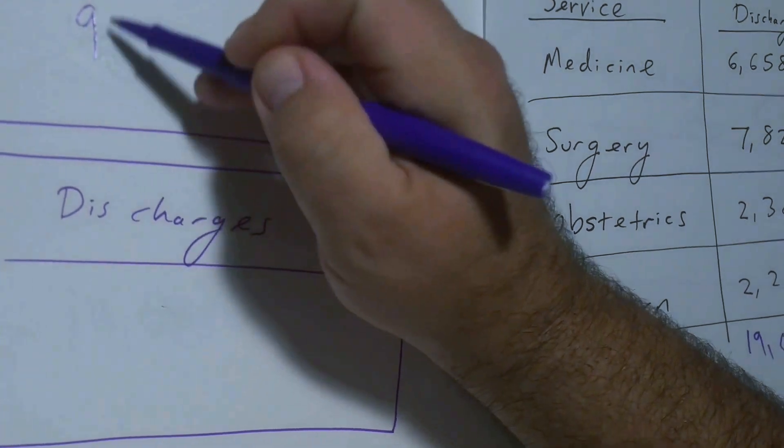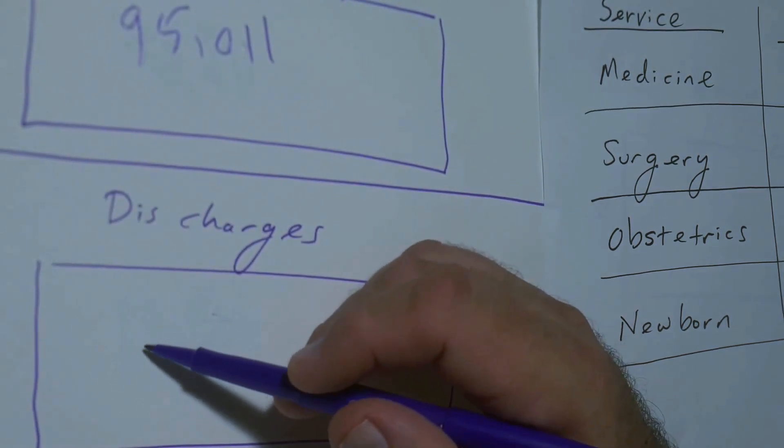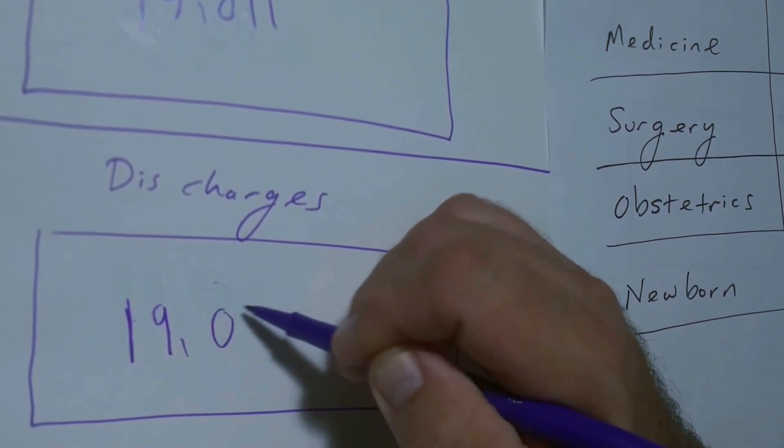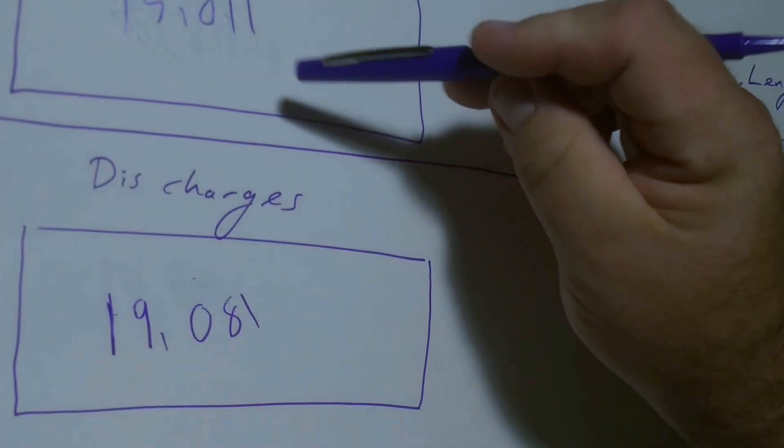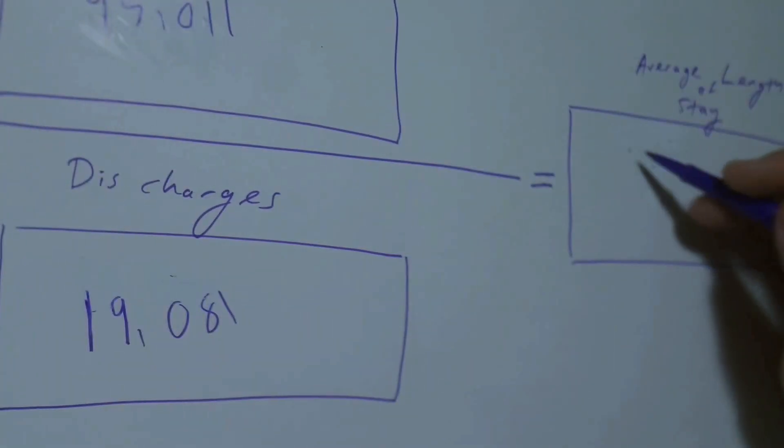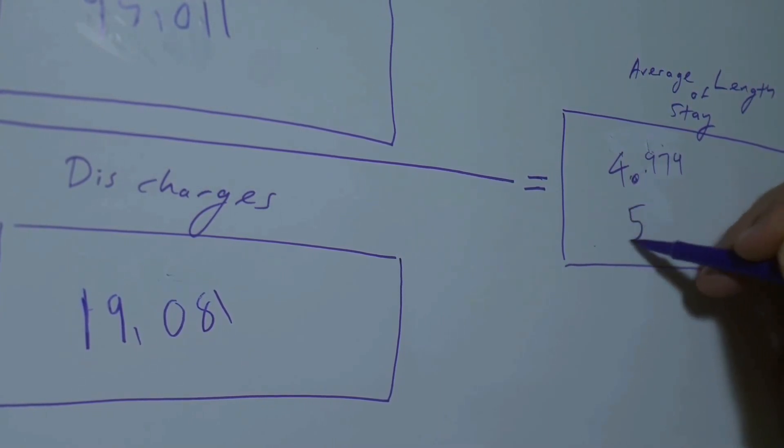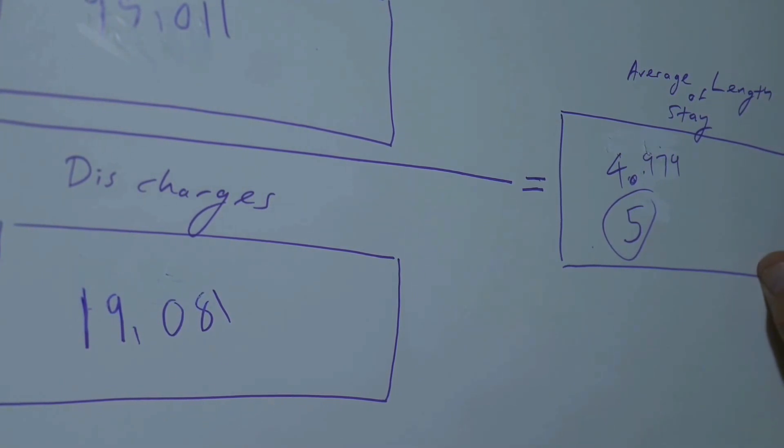Discharge days is 95,011, and the number of discharges is going to be 19,081. If I divide the 95,011 by 19,081, I get a number that's 4.979, which is approximately 5. So the average length of stay for all services is 5 days.